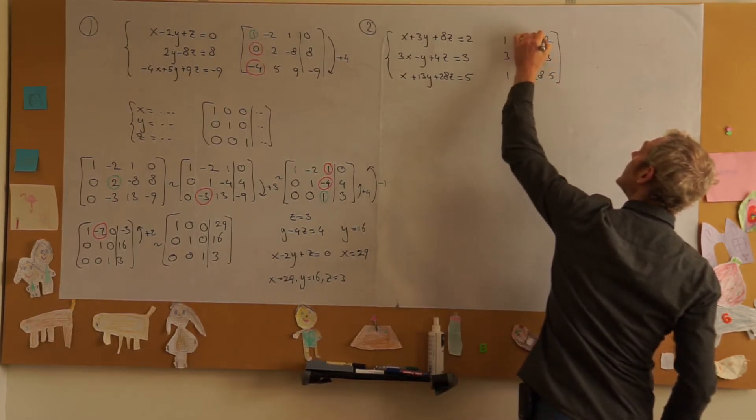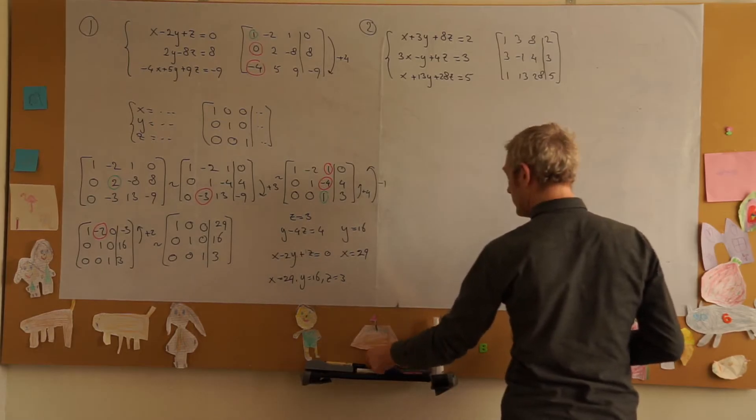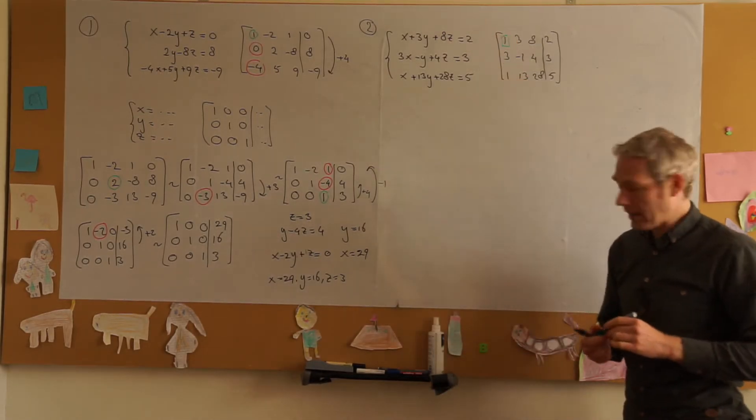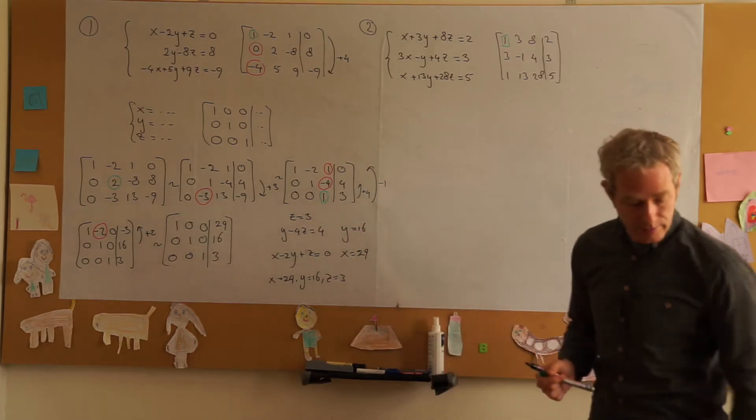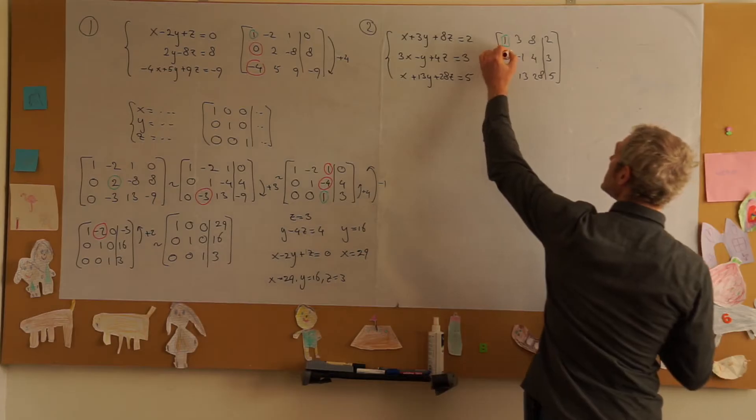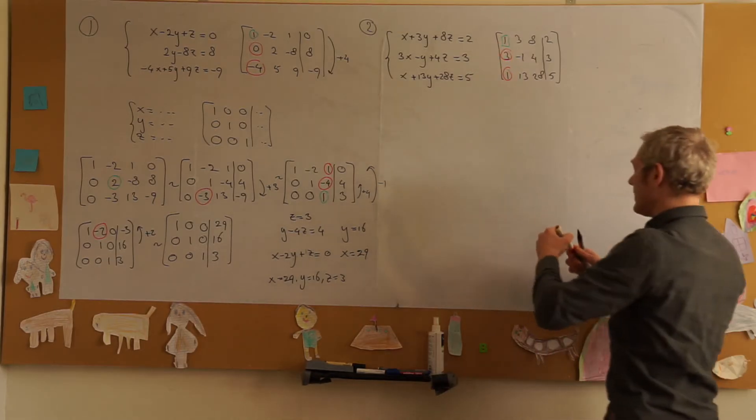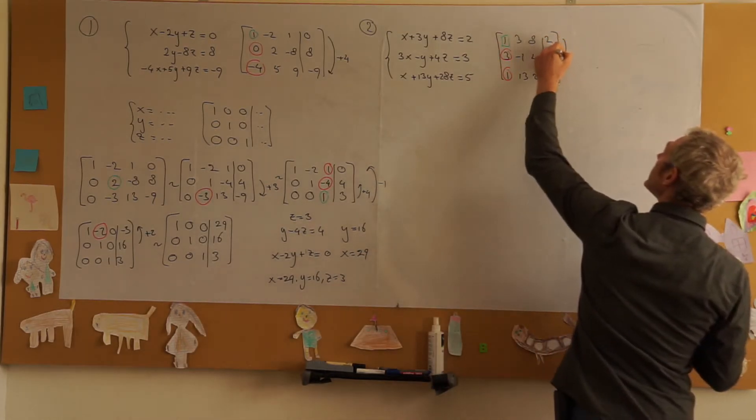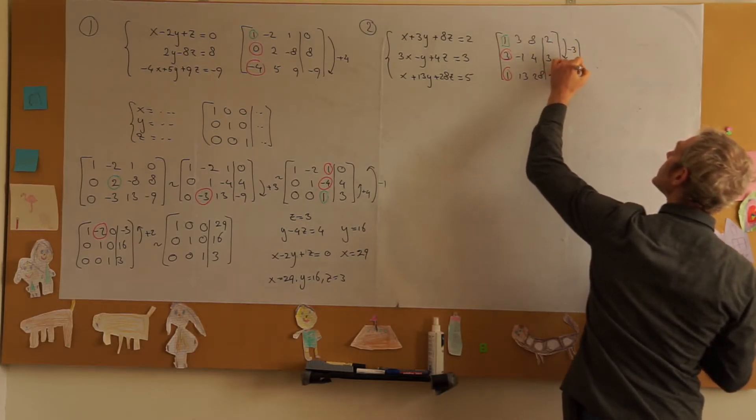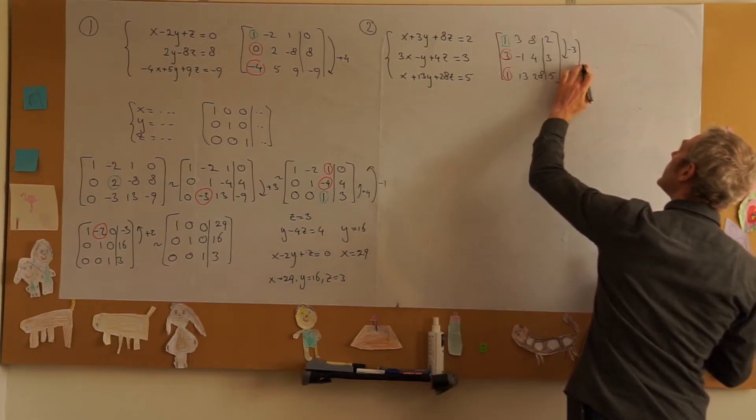Well I already have a 1 in the top left-hand corner here and so the next step is to create zeros in this position and this position which I can achieve by subtracting the first row three times from the second and once from the third.